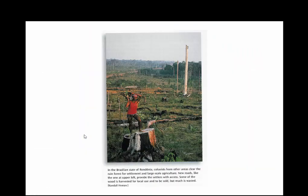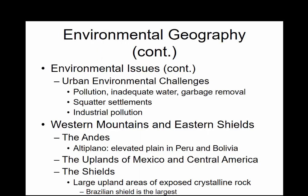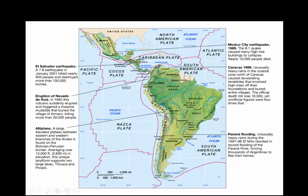This is the Brazilian state where they're clearing along the Amazon. In terms of physical regions, we have the Western Mountains and the Eastern Shields. We've got the Andes, which run up the spine of South America, and then the Shields — large upland areas of exposed crystal and rock. There's the boundary between the South American Plate and the Nazca Plate, where it meets with the Caribbean Plate. So there's a lot of volcanic and tectonic activity in Mexico, Chile, Peru, and Colombia, but not as much in Brazil.